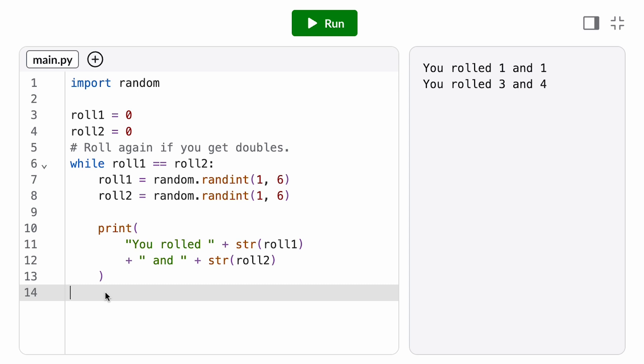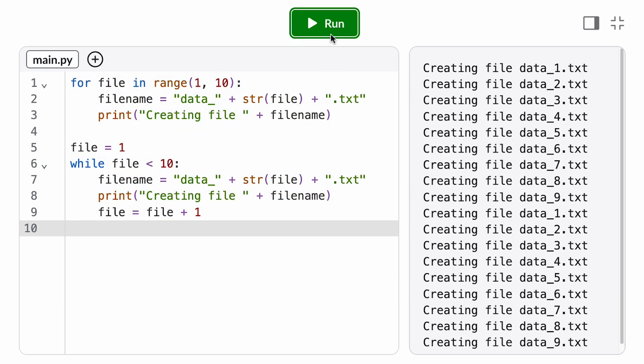But when we just need to repeat a block of code a fixed number of times, for loops are the fastest option because they collapse all the loop variable assignments into a single line of code.